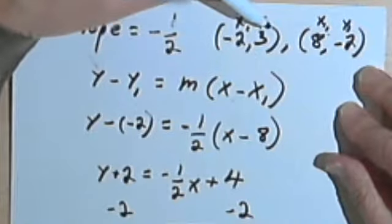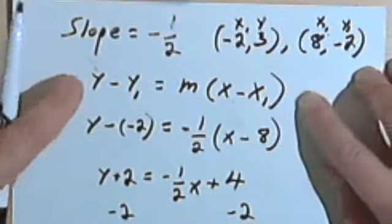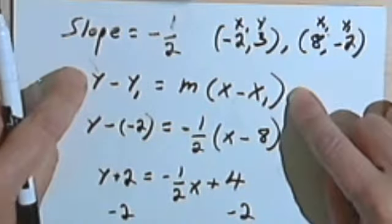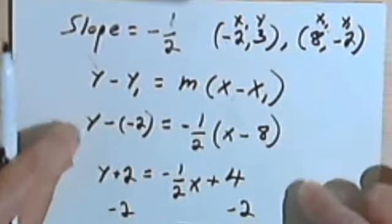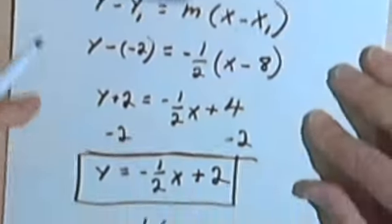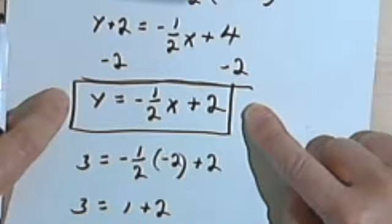and plug the slope and the ordered pair into your point-slope form of the equation. So we plug that in, we do the math, and that will give you the equation for the line.